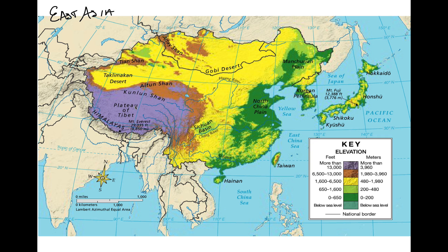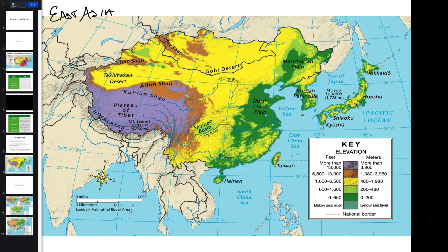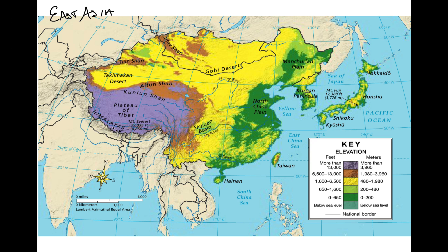We're going to start with mountains. The mountains are over here — if we look at our elevation, mountains are more of this purple and brown area. The biggest area of mountains is over here in China, and it's part of the Himalayan mountain range — a huge mountain range.